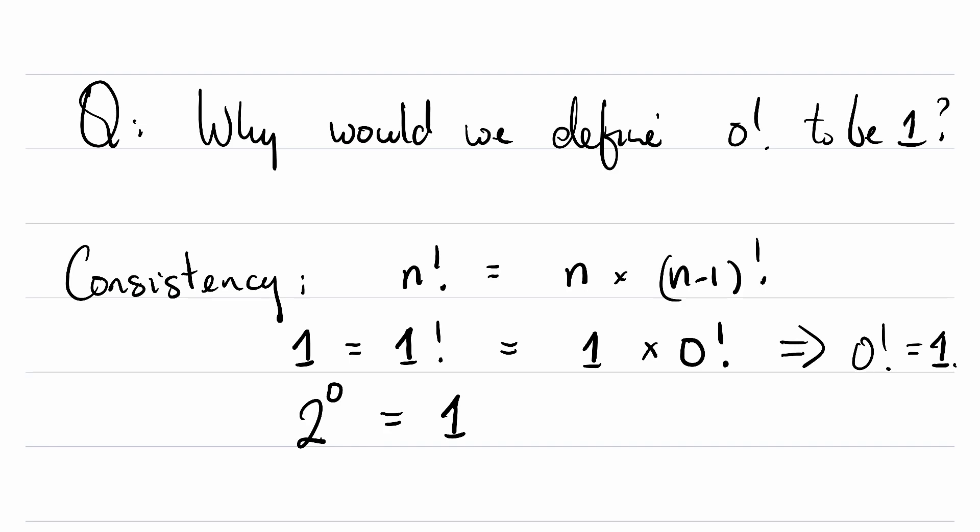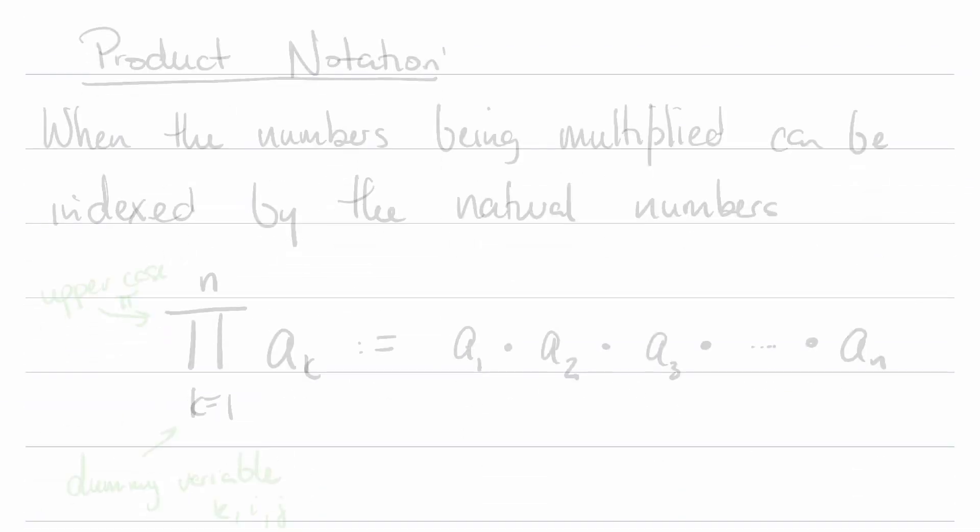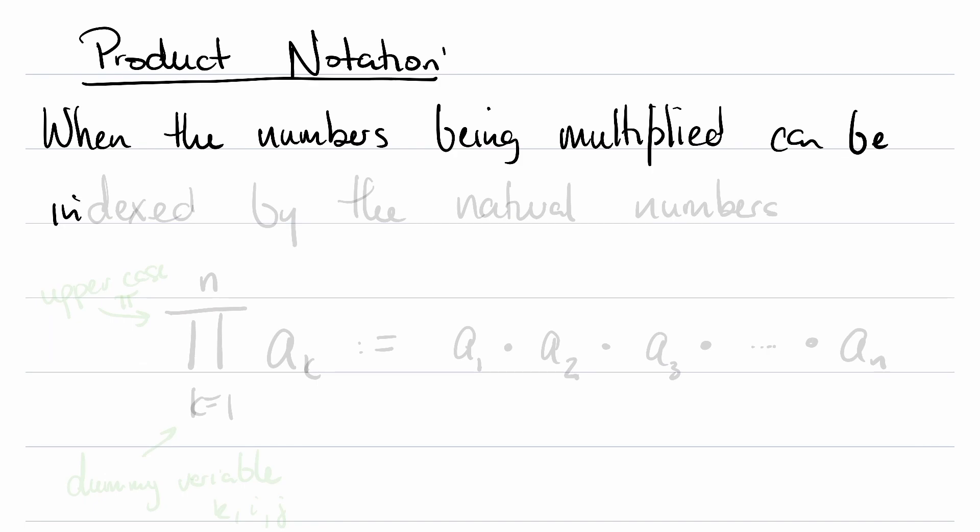But now that we have defined our factorial, I do want to introduce product notation. When do you deploy product notation? When the numbers being multiplied can be indexed by the natural numbers 0, 1, 2, 3, etc. This is what it looks like.